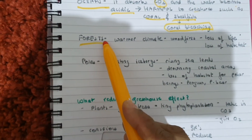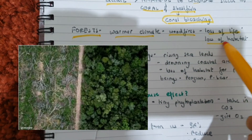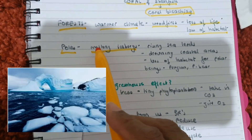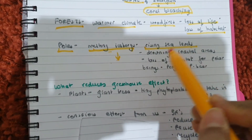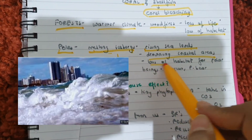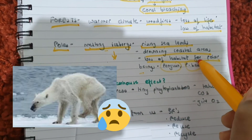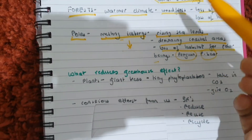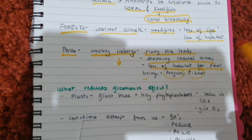If we look at the forests, warmer climates can cause wildfires, loss of life and loss of habitat. If we look at the poles, we are facing an issue of melting icebergs. That causes a rise in sea levels, drowning of coastal areas, and loss of habitat for polar beings such as penguins and polar bears. So these are the effects of greenhouse gases, and this is what global warming is all about.